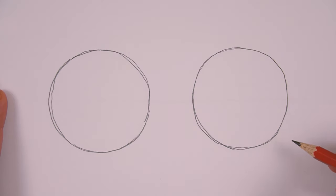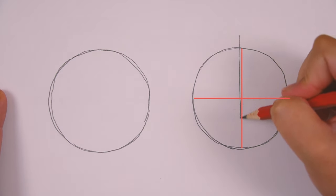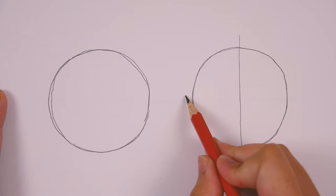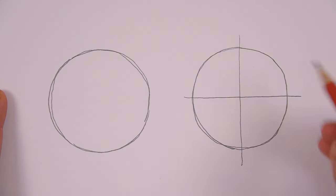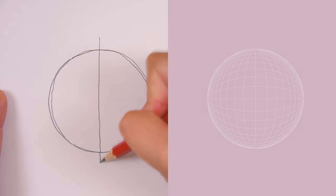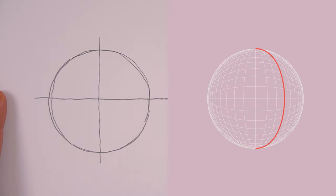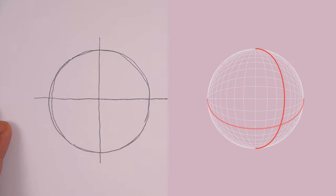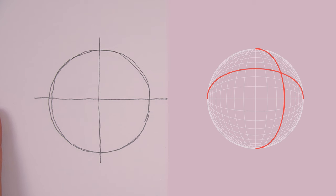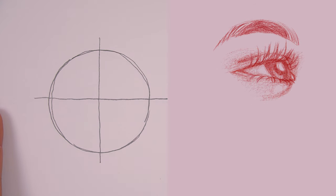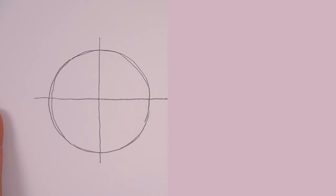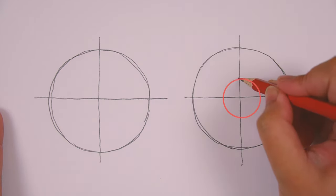Next, let's establish the center cross. This cross is important when drawing the eye in different angles. For a front view the cross will be completely straight and centered; however in a three-quarter view the vertical center line will shift left or right and become a curve. The same applies when drawing from a high or low angle, where the horizontal center line shifts. Next, let's draw a small circle right in the middle of the center cross to represent the iris.